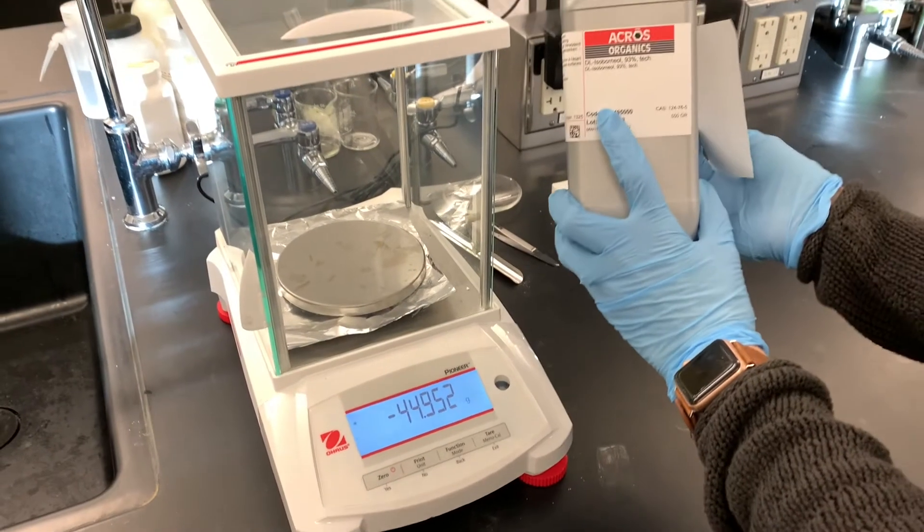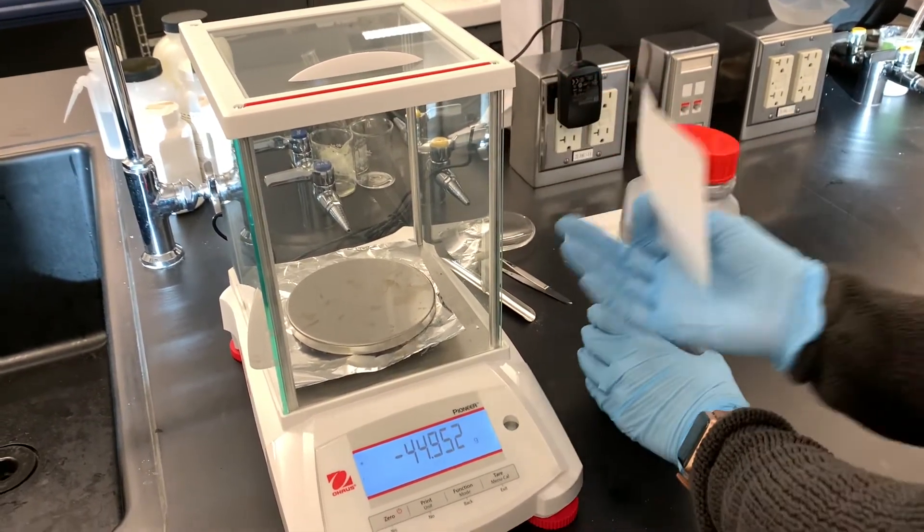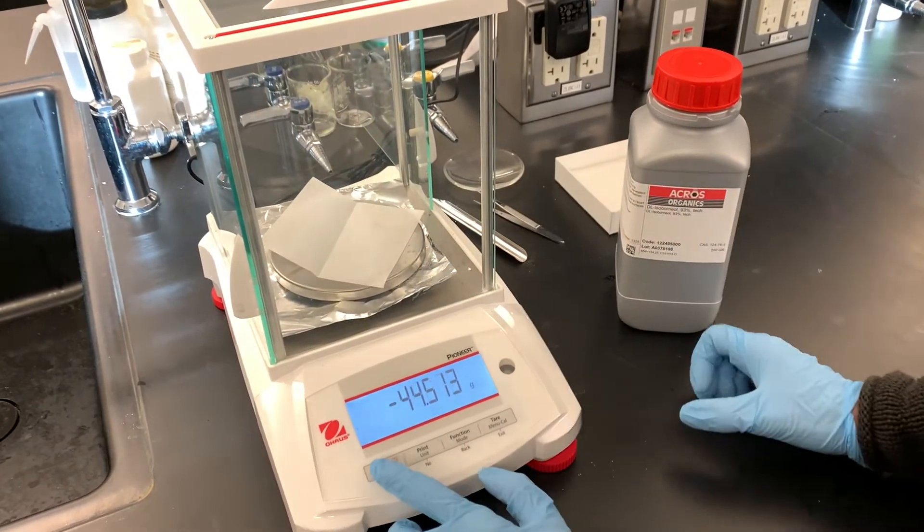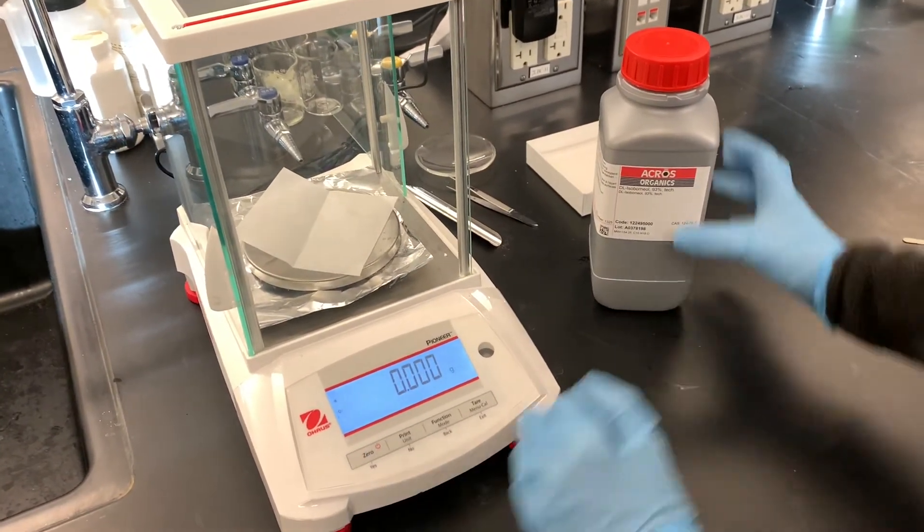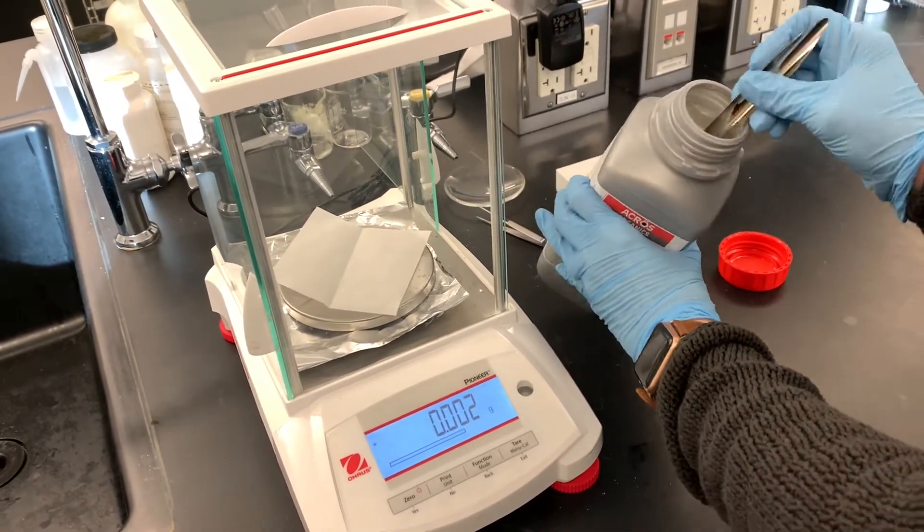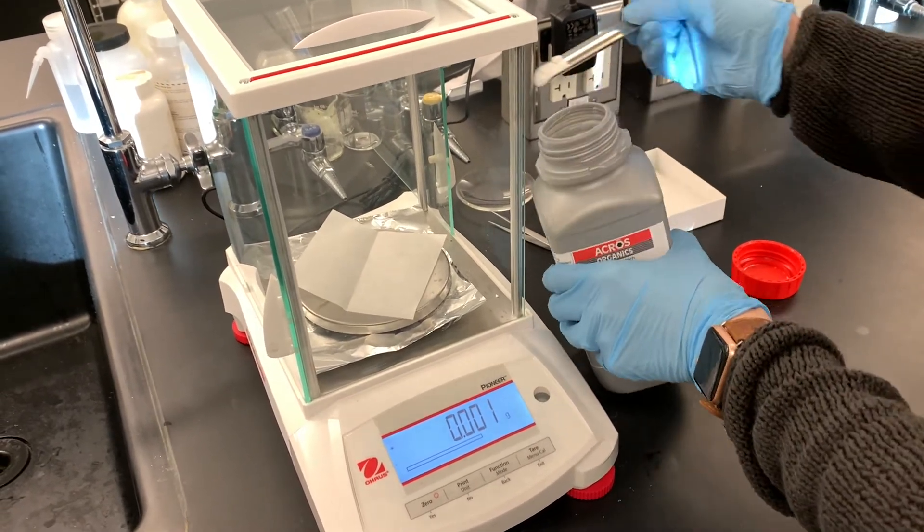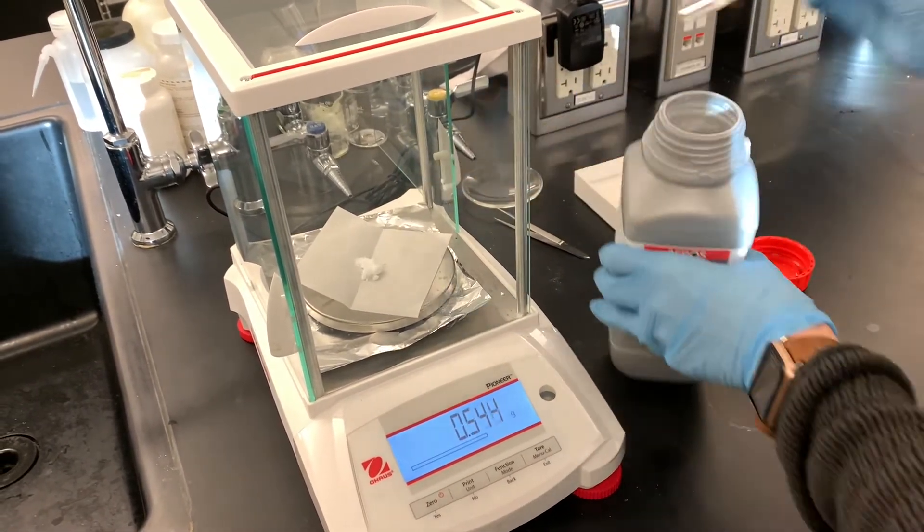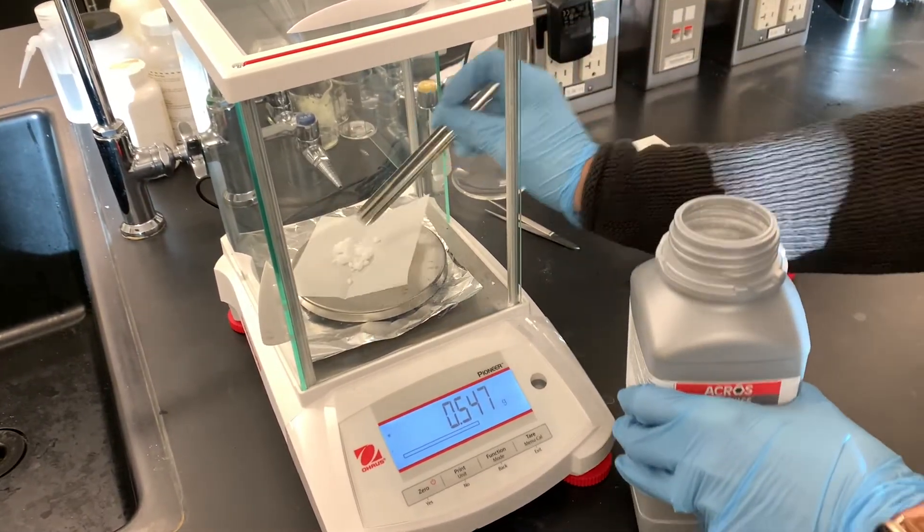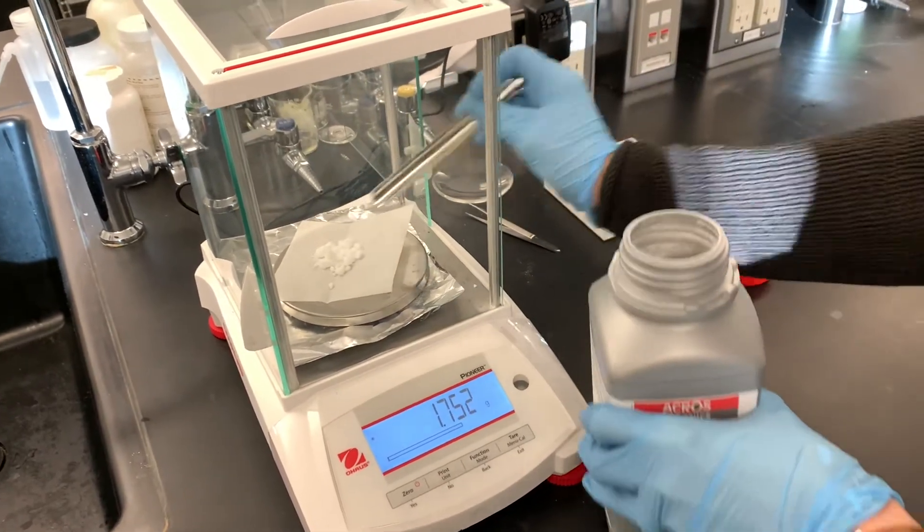We're going to weigh out about 3.86 grams of isoborneol. This is a really strong smelling solid, smells kind of like something that you would maybe rub on yourself if you had sore muscles. There are some pretty large chunks in here. I'm going to try to work pretty quickly to avoid having to smell too much of this.